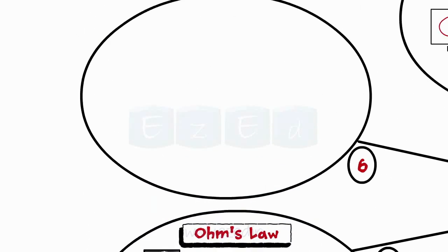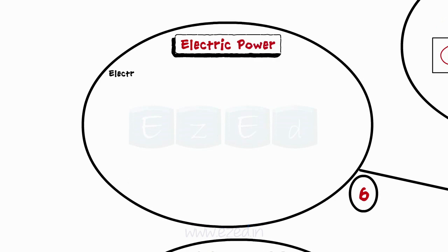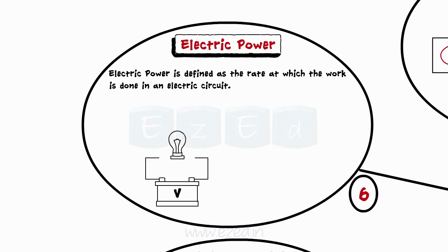Electric power is defined as the rate at which the work is done in an electric circuit, that is the rate at which the bulb converts electrical energy into light. It is given by the formula P is equal to V into I or I square into R or V square upon R and measured in watts.